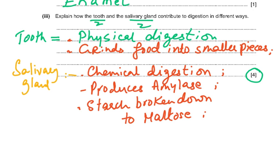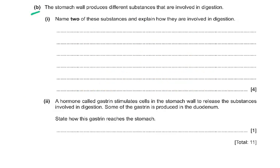Moving to part B: the stomach wall produces different substances involved in digestion. Name two of these substances and explain how they are involved in digestion. Number one: it produces hydrochloric acid, which provides the optimum pH for the enzymes that work in the stomach. The enzyme that works in the stomach is pepsin, and pepsin breaks down protein into peptides — four marks, four mark scheme points.